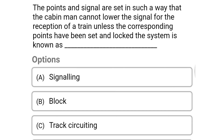Next question: the points and signals are set in such a way that the cabin man cannot lower the signal for reception of a train unless the corresponding points have been set and locked. This system is known as — option A: signaling, option B: block, option C: track circuiting, option D: interlocking. The correct answer is option D: interlocking. We will see more in the next video. Thank you.